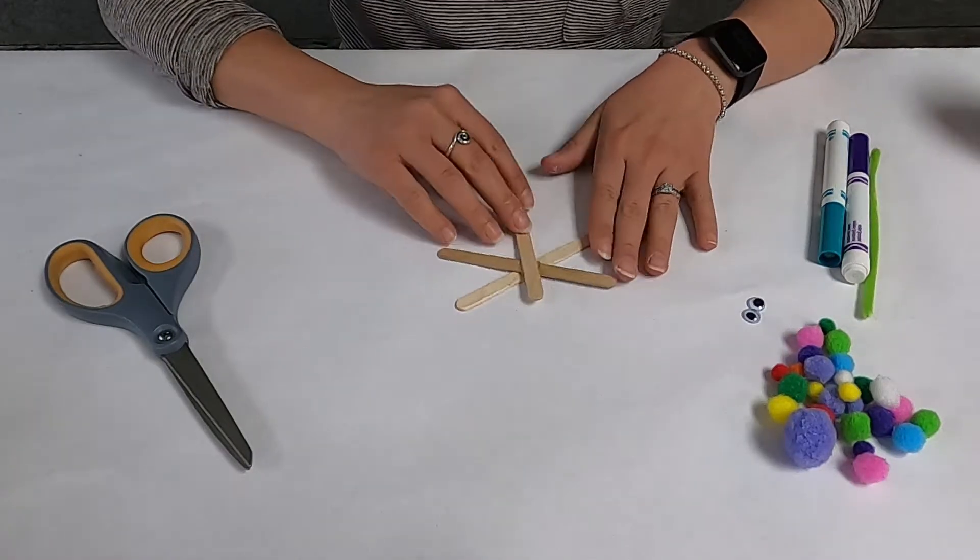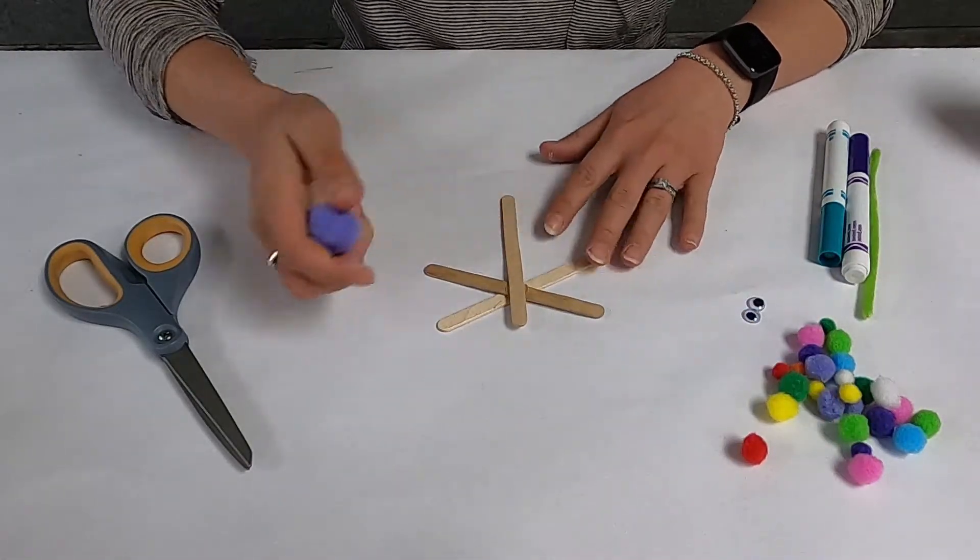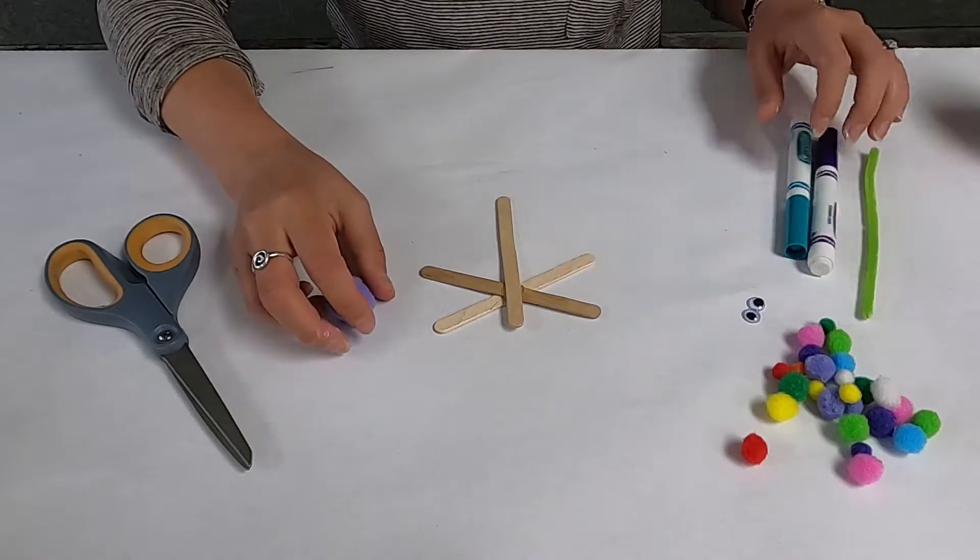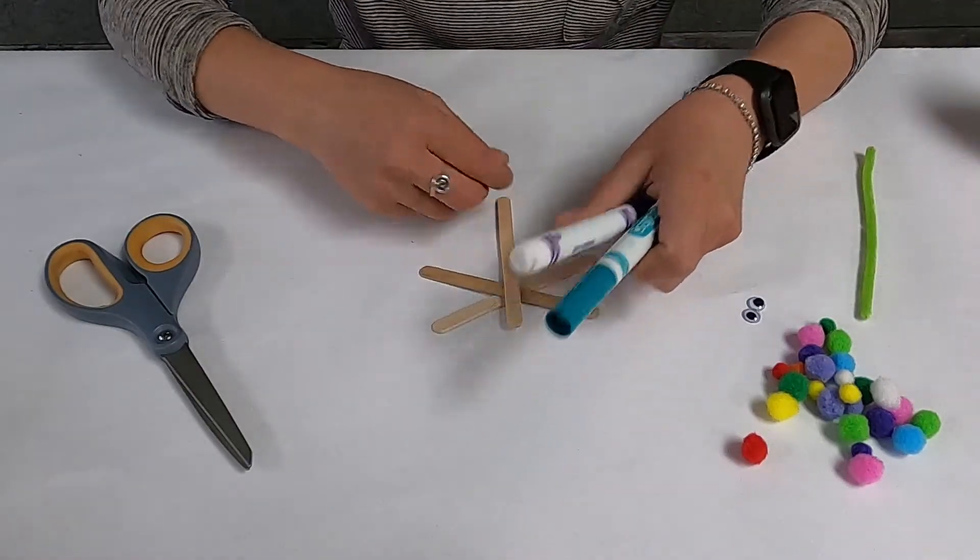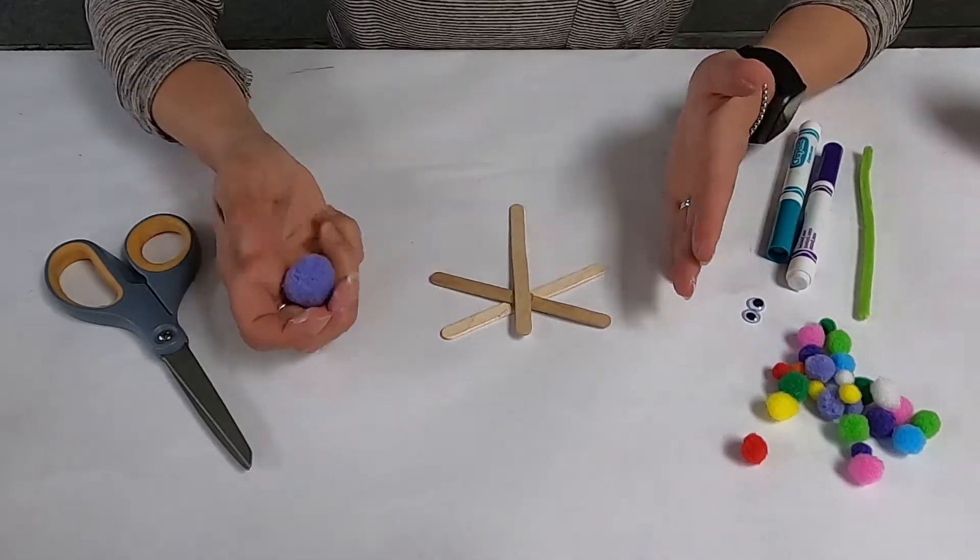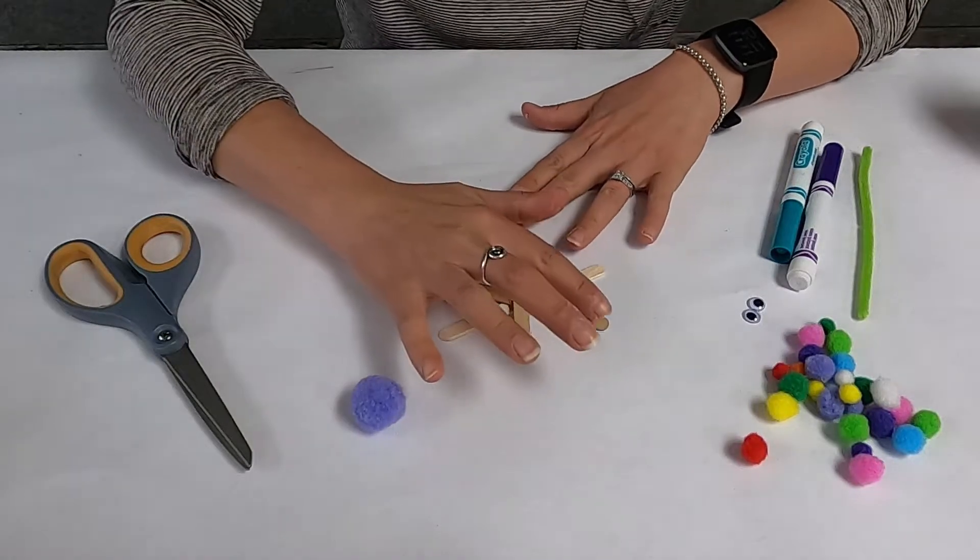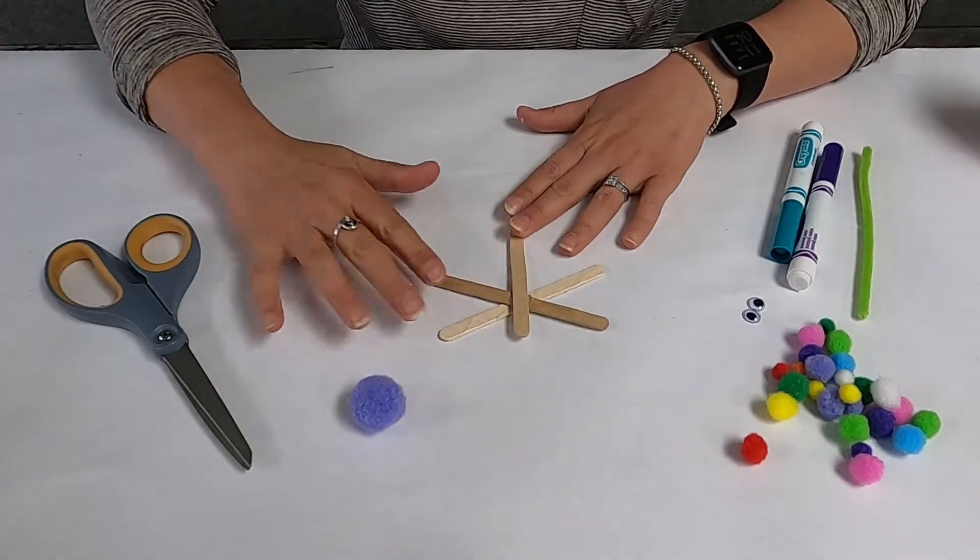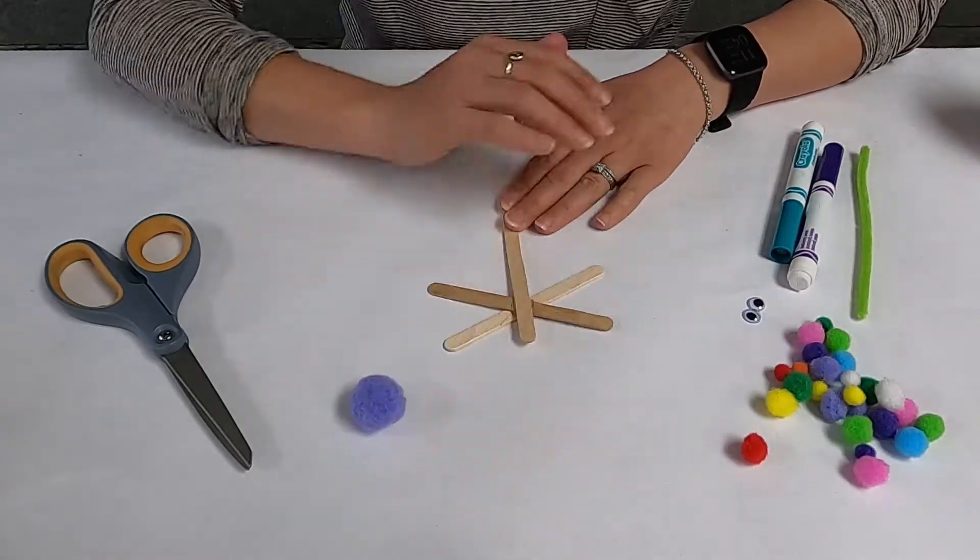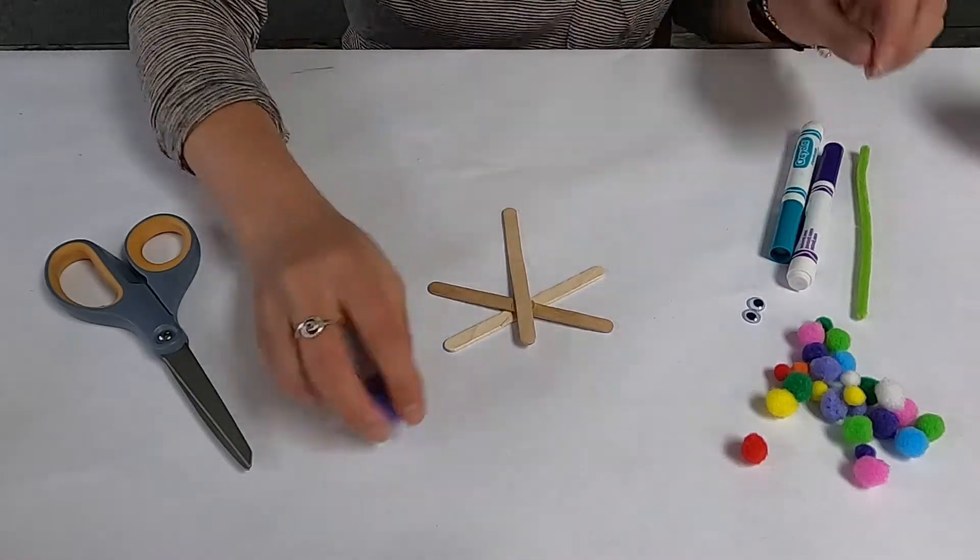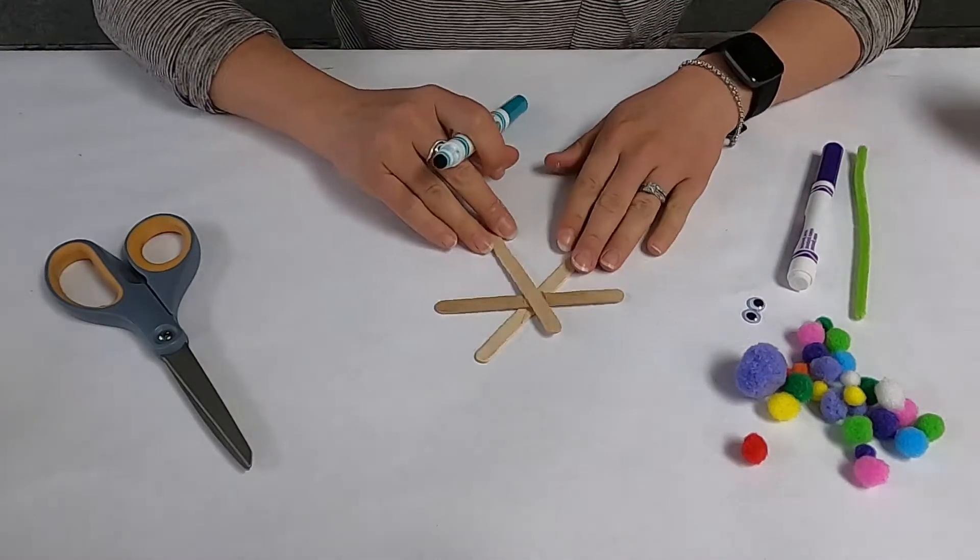So the idea is, if you don't have these pom-poms or don't want to use them, that's okay too. You can decorate just the wings and put the pom-poms here, or you can just decorate it with markers and paint. It's really up to you. So what I'm going to do is actually color the wings here, and then for the body I'm going to use the pom-poms. But you can do pom-poms on all of it or none of it. It's really kind of up to what you have laying around the house or what your little one wants to do.